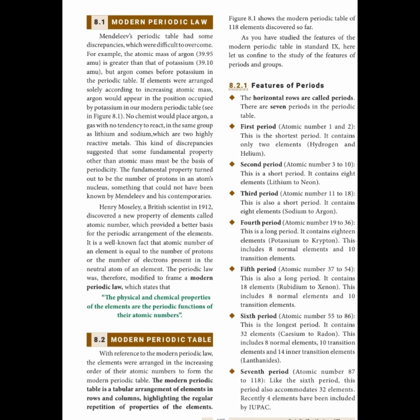Henry Moseley, a British scientist, in 1912 discovered a new property of elements called atomic number. Based on their atomic number, he arranged the elements in groups as well as in periods. That arrangement we call the modern periodic table.